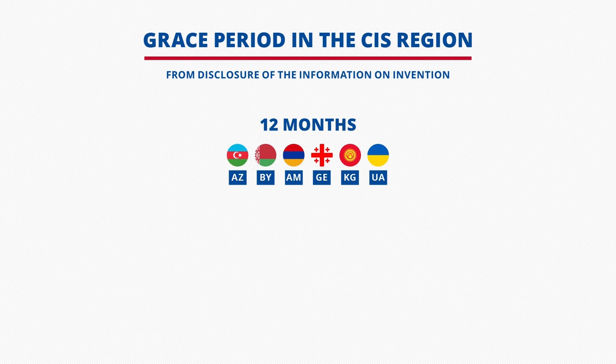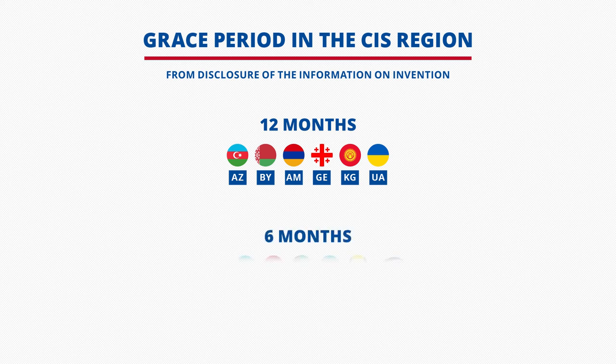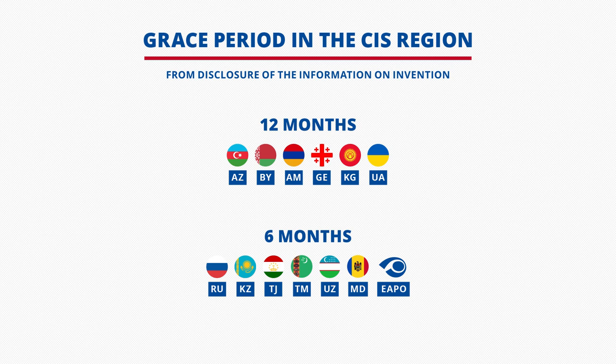Regarding the grace period in the CIS: the grace period foreseen for industrial property objects such as inventions and utility models in cases of public disclosure can mainly be divided into two types. First, the application should be filed with the patent office within 12 months after the date of disclosure of information — this applies to Azerbaijan, Belarus, Armenia, Georgia, Kyrgyzstan, and Ukraine. Second, the application should be filed with the patent office within 6 months after the date of disclosure of information — this applies to Russia, Kazakhstan, Tajikistan, Turkmenistan, Uzbekistan, Moldova, and the EAPO.